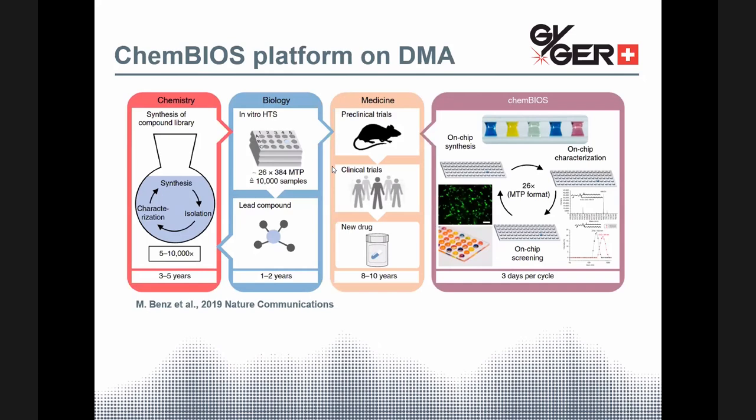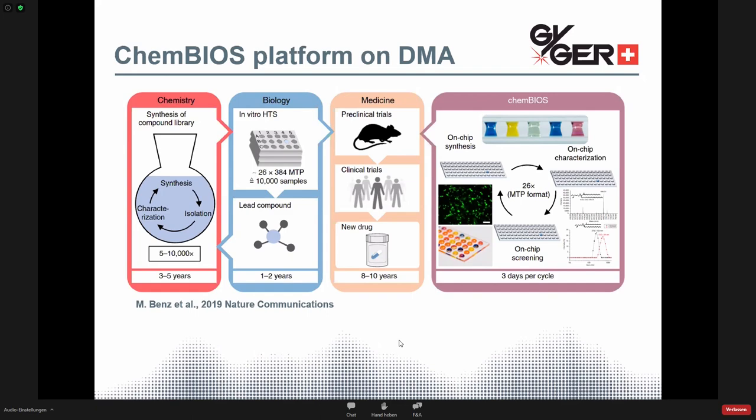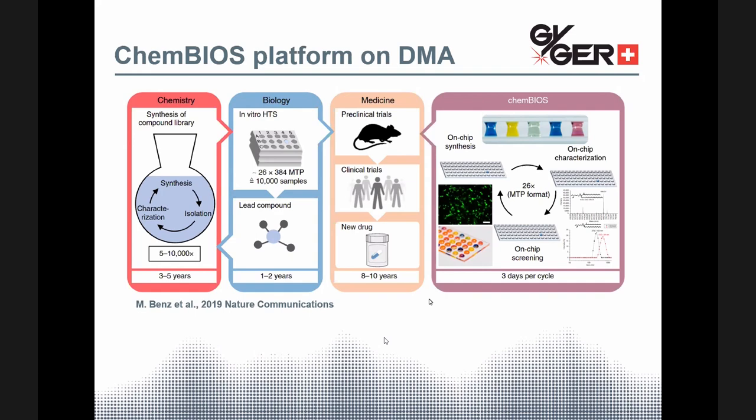Let's have a closer look to the surface of such droplet microarrays. A so-called ChemBIOS on-chip platform had been developed that combines the chemistry and the biology together in such a miniaturized format on the DMA. And the idea behind is to combine everything on a single chip - the on-chip synthesis, the characterization, as well as the biological cell-based screening. And as depicted underneath, this combination reduces the time required for everything dramatically. And if you wish to get more detailed information on this ChemBIOS platform, I'd recommend the publication of Benz and colleagues that had been published in 2019 in Nature Communications.